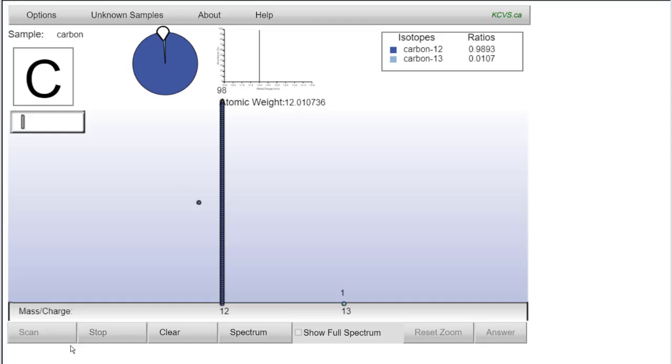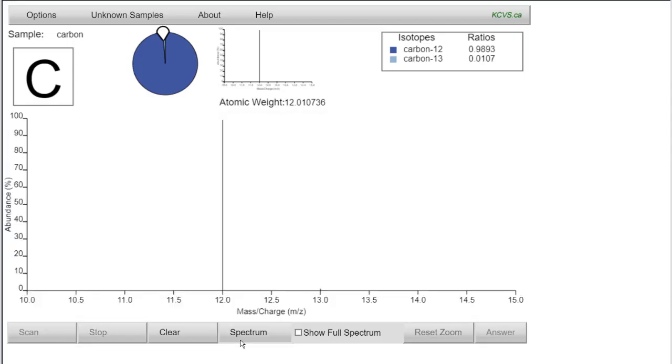Using a mass spectrometer, you would be able to tell the different isotopes of carbon apart from each other as different peaks in the spectrum.